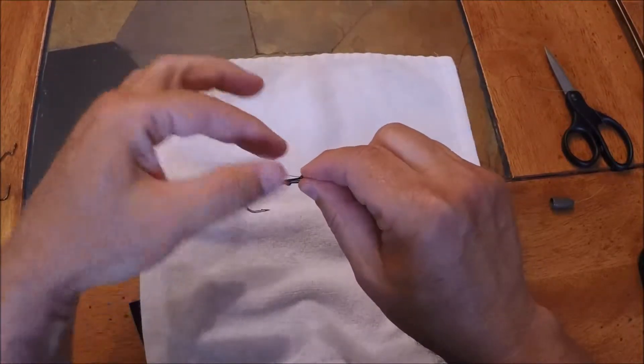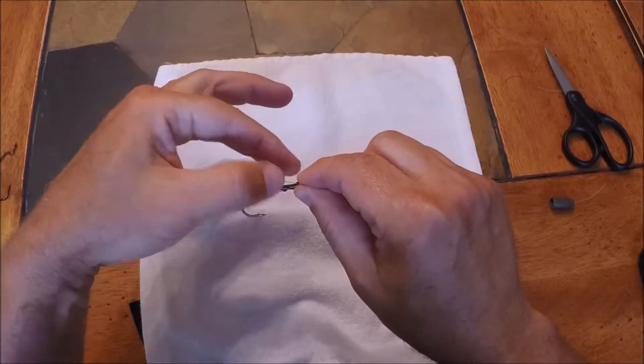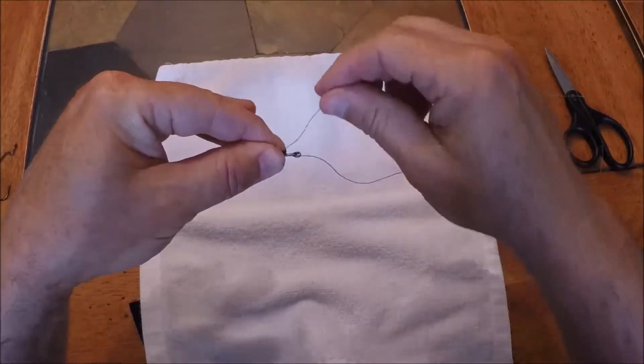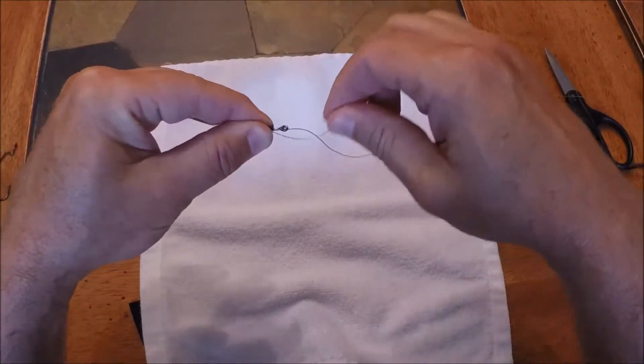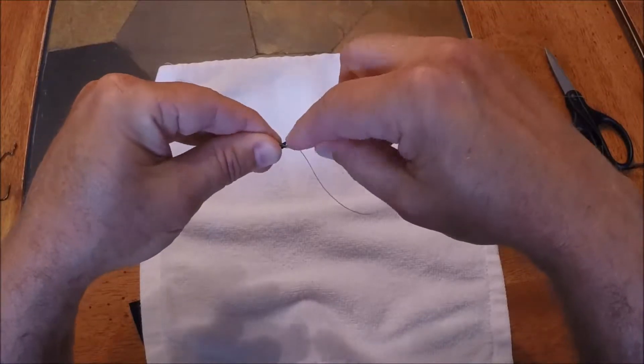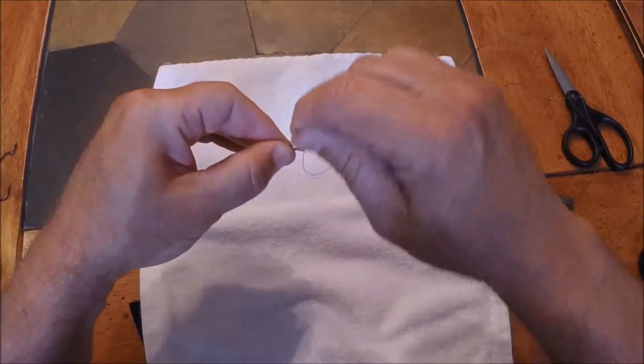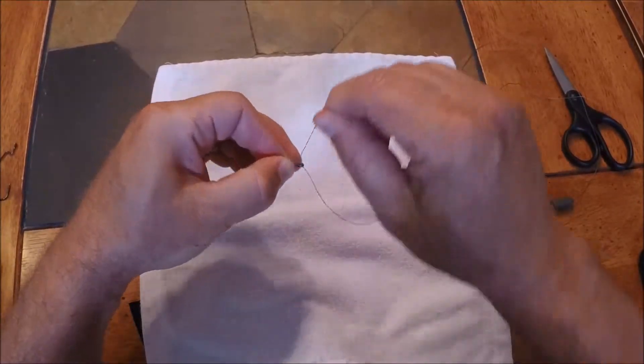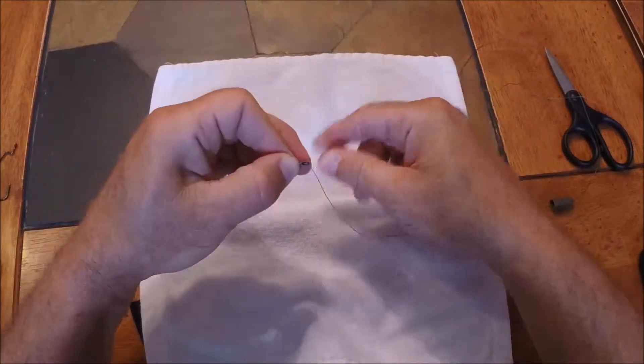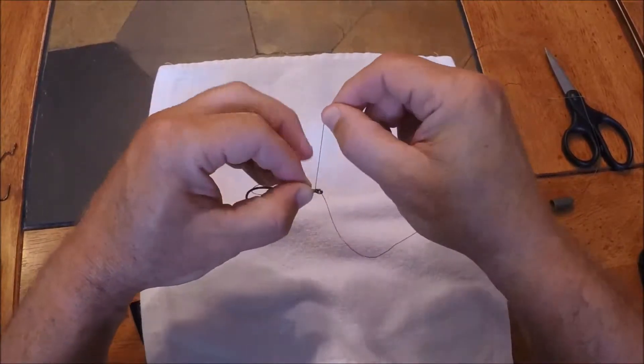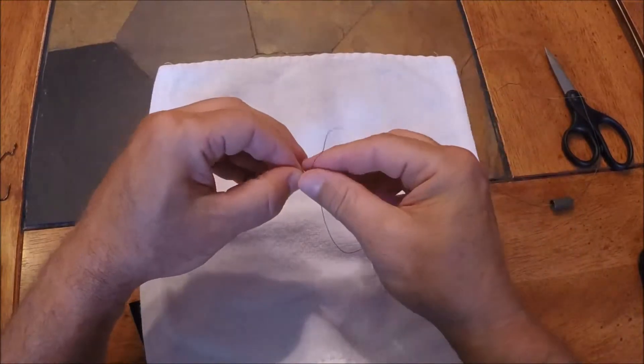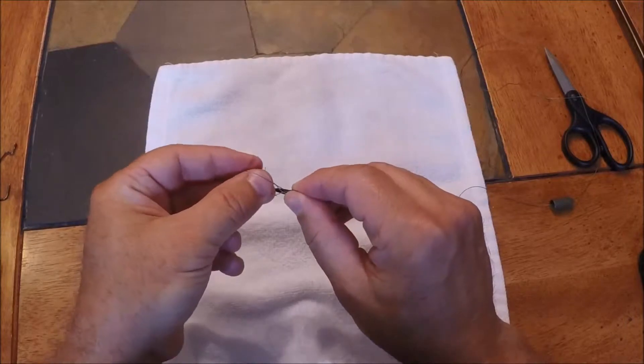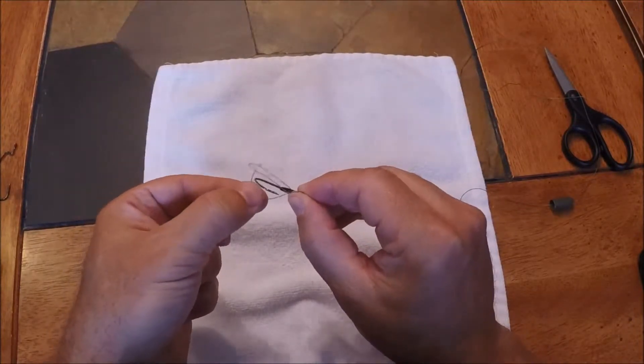Okay, at that point I'm going to pinch the line and the shank right there, and with this tag end I'm going to go around the bait keeper but in front of the eyelet five to seven times. So one, two, three, four, five. Once I've done that, I'm going to take my tag end and go back through that first loop that I created. Like so.